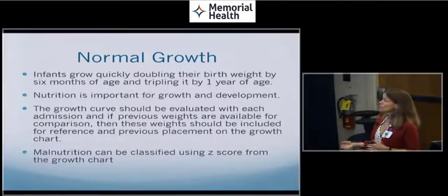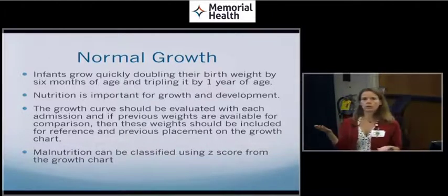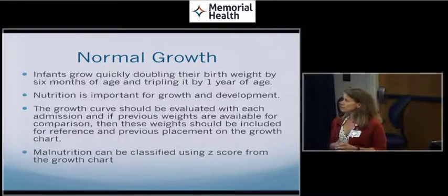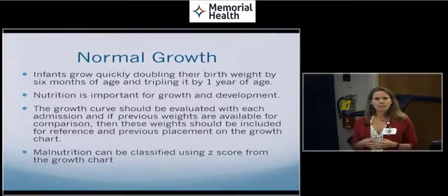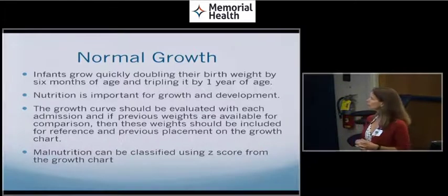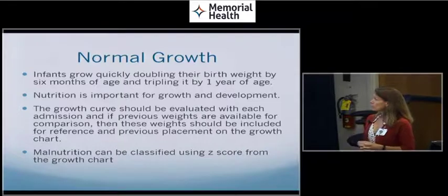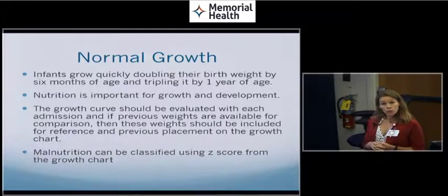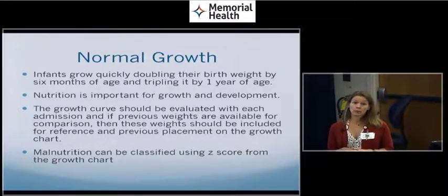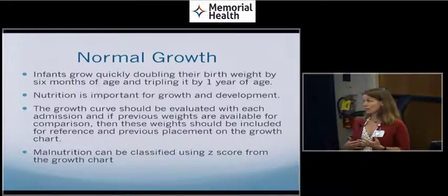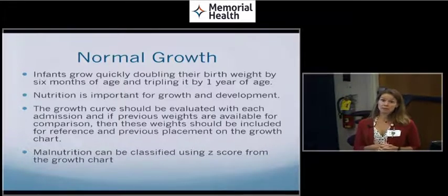We want to look at those previous weights, if they're available, and we want to compare to where we are now. That tells us if they're adequately nourished, and if not, maybe we need to tease out if there is something else going on. And malnutrition can be classified using Z-scores from the growth chart. So the growth chart is really important because if we do have a significantly underweight baby, or even slightly underweight, that may be good information for us to have to classify if they are or are not malnourished.